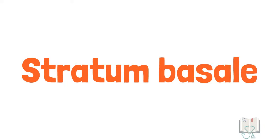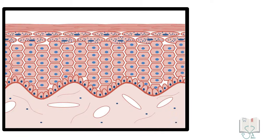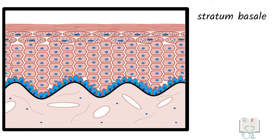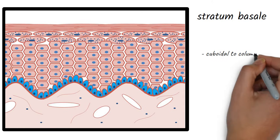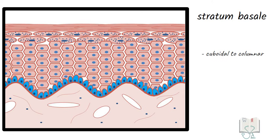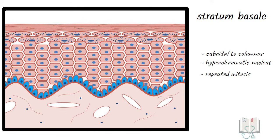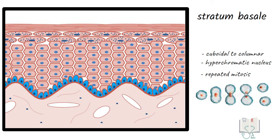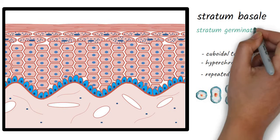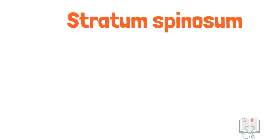Stratum basale is the deepest layer, attached to the basement membrane. Basal cells are cuboidal to columnar cells and have a hyperchromatic nucleus. These cells are rich in cell organelles and undergo repeated mitotic divisions. This layer is responsible for the continuous supply of new keratinocytes and is therefore also referred to as stratum germinativum.